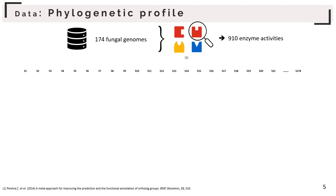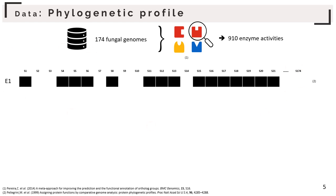Among our fungal species, we identified 910 enzyme activities associated with metabolism. For each enzyme activity, we have its phylogenetic profile, which is the presence and absence of the enzyme activity across our species. For example, enzyme 1 is present in species 1, but absent in species 2 and 3, but present in species 4, 5, 6, and so on. Enzyme 2 is present in all studied species.